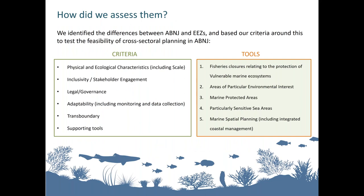To evaluate the five tools systematically, review criteria were determined based on the fundamental elements of area-based planning — for example, stakeholder engagement or adaptability. For each criterion, the key differences between national waters and ABNJ were highlighted and discussed. The criteria were applied to existing international or regional guidelines for each tool to identify key features enabling the tool to contribute to the conservation and sustainable use of biodiversity in ABNJ.